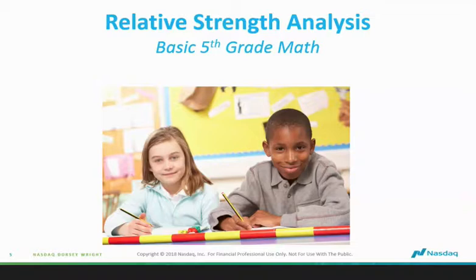One of the important parts of the equation of point-and-figure technical analysis is relative strength. Relative strength is a simple calculation, but back 30 years ago we had a Tandy 3000 — that's all we had. Floppy disks. Many of you listening don't know what a floppy disk is. That's what we used. It's at the Smithsonian Institute probably now. So when we had to do relative strength charts, we were able to do maybe 200 per week because it requires basic fifth-grade division.